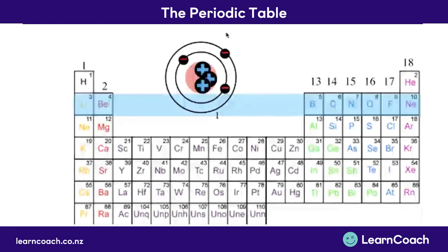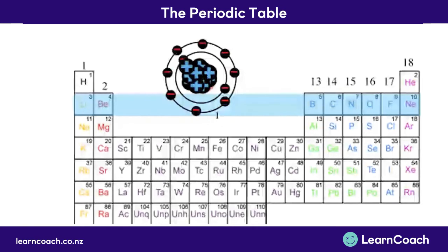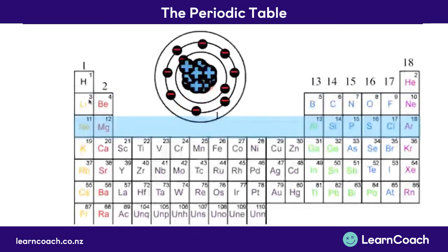We start with lithium, which has one electron in its second shell. And we can go right across to neon, which has a full second shell. Then we move on to the third shell with sodium, which has one electron in its third shell. So the horizontal rows show which electron shell is being filled.